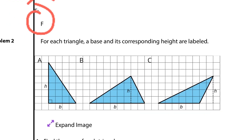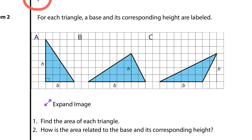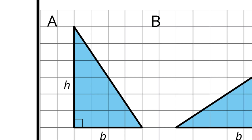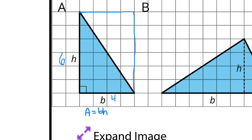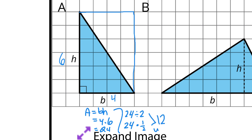Question 2: for each triangle, a base and corresponding height are labeled. Find the area of each triangle, and explain how the area is related to the base and its corresponding height. For triangle A, I'll draw in this rectangle or parallelogram to help find the area. The height is 6 units and the base is 4 units. The area of a parallelogram is base times height, so that's 4 times 6 equals 24. However, I take that 24 and divide by 2, or multiply by one-half, to get a solution of 12 square units.